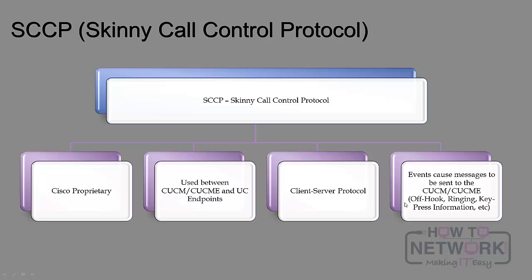Skinny, or SCCP, the skinny call control protocol, is a Cisco proprietary call control protocol. It's primarily used for signaling events between unified communication endpoints like IP phones and a call manager or Call Manager Express on a router. It is a client-server protocol — the key takeaway is that because it's client-server it's not very intelligent. Most of the intelligence is at the head end, and without call manager the phone can't set up or tear down calls on its own.